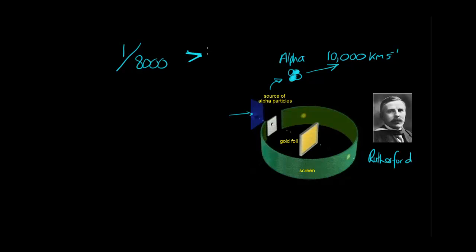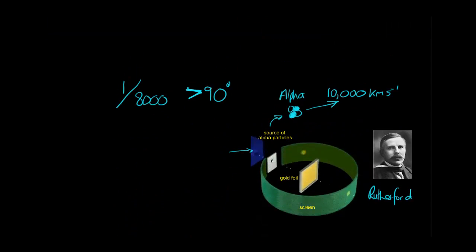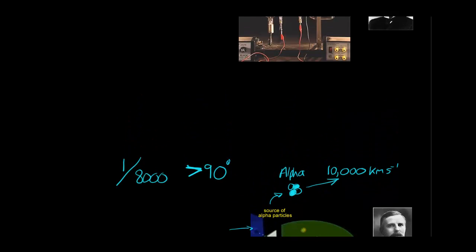And what Rutherford's team observed was that about one in every 8,000 alpha particles were scattered through an angle that was greater than 90 degrees. Now, this was a very unexpected result.